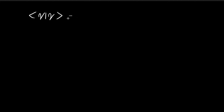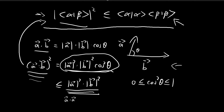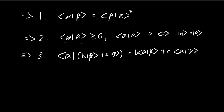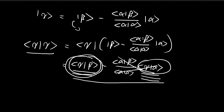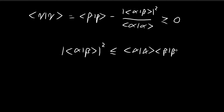Since the inner product of gamma with alpha is zero, that entire term vanishes. So the inner product of gamma with gamma equals just the inner product of gamma with beta, which we found equals the inner product of beta with beta minus the absolute value squared of the inner product of alpha with beta, divided by the inner product of alpha with alpha. By the second rule, the inner product of any vector with itself is always greater than or equal to zero. So with a bit of rearranging — moving this term over and multiplying through — you can see that the Cauchy-Schwarz inequality must be true. And there you have it: this is how you prove the Cauchy-Schwarz inequality.